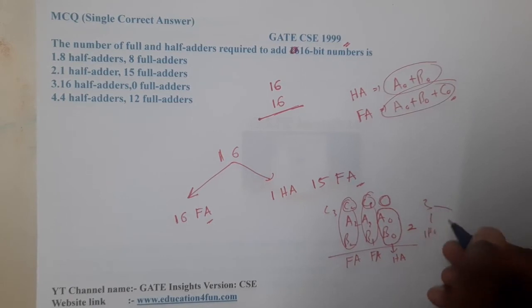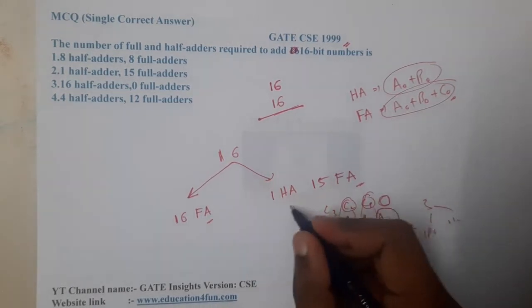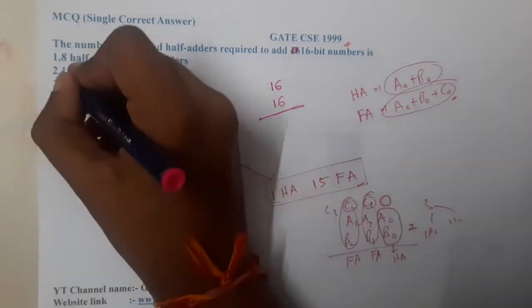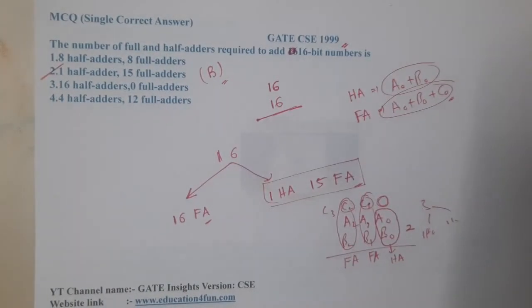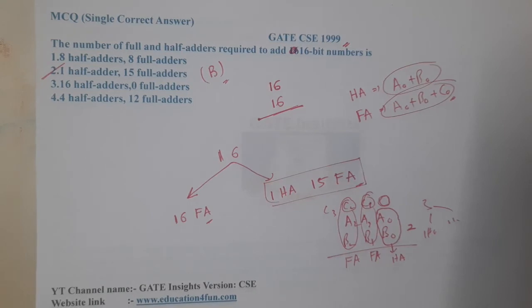With this understanding, you can say that option B is the correct answer: one half adder and 15 full adders.